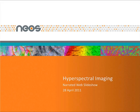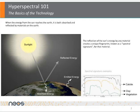During the day, the sun's energy reaches the earth and is both reflected and absorbed by the earth's surface. When reflected, the sun's energy changes depending on the material it is reflecting off of. This reflected energy creates a unique fingerprint known as a spectral signature for each material. Shown here to the right are spectral signatures for calcite, clay, and vegetation.